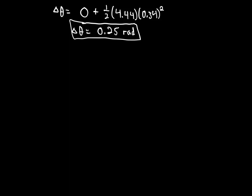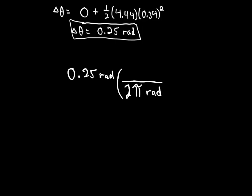To convert radians to revolutions: 0.25 radians times the conversion factor — two pi radians equals one revolution — gives approximately 0.04 revolutions.